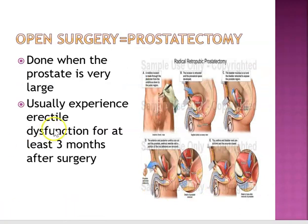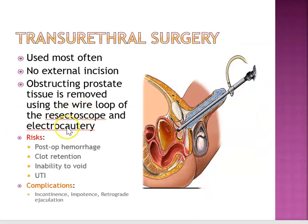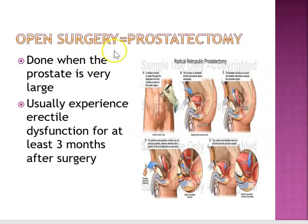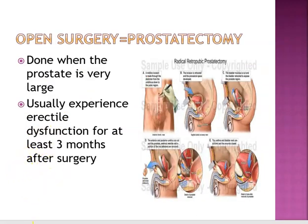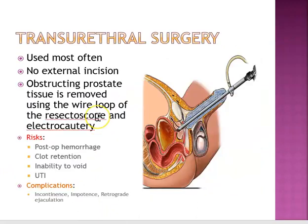They still do an open prostatectomy when absolutely necessary, though TURP is the most common. An open prostatectomy is done when the prostate is very large, and patients usually experience ED for about three months after surgery. The retropubic approach is preferred as it decreases the risk of ED. There's a lot more risk for bleeding with open surgery compared to TURP. A transurethral incision of the prostate makes small incisions where the prostate is attached to the bladder, splitting the gland to decrease pressure within the urethra — no tissue is removed and there's less chance of post-op complications.